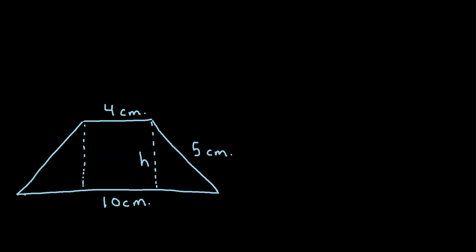So let's say we have this trapezoid here and we're told that this bottom base has a length of 10 cm, this top base has a length of 4 cm, and this slant height right here is 5 cm. How can we find the height given all of this information?